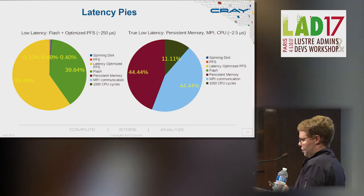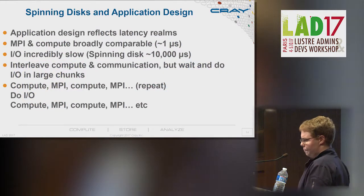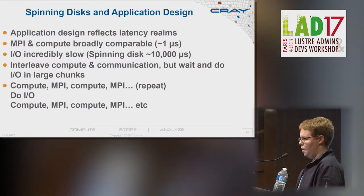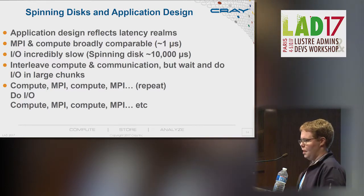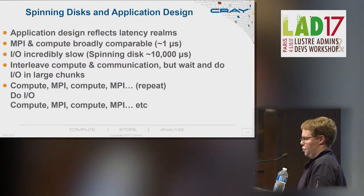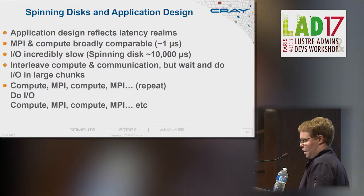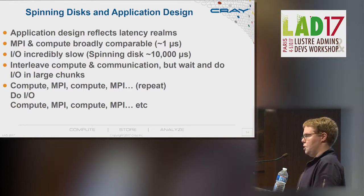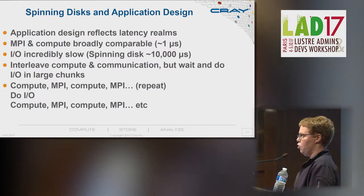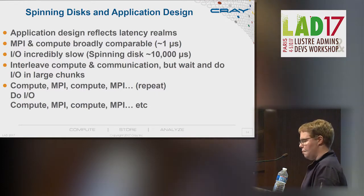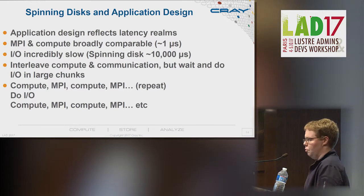All of this has been reflected in application design. MPI communication between nodes and compute are broadly comparable, and people have gotten used to it. But IO is many times slower — specifically 10,000 times slower. So the application model everyone uses is you interleave your compute and your communication, but you avoid IO as much as possible — you do it all at the beginning, all at the end, or in large chunks in the middle.